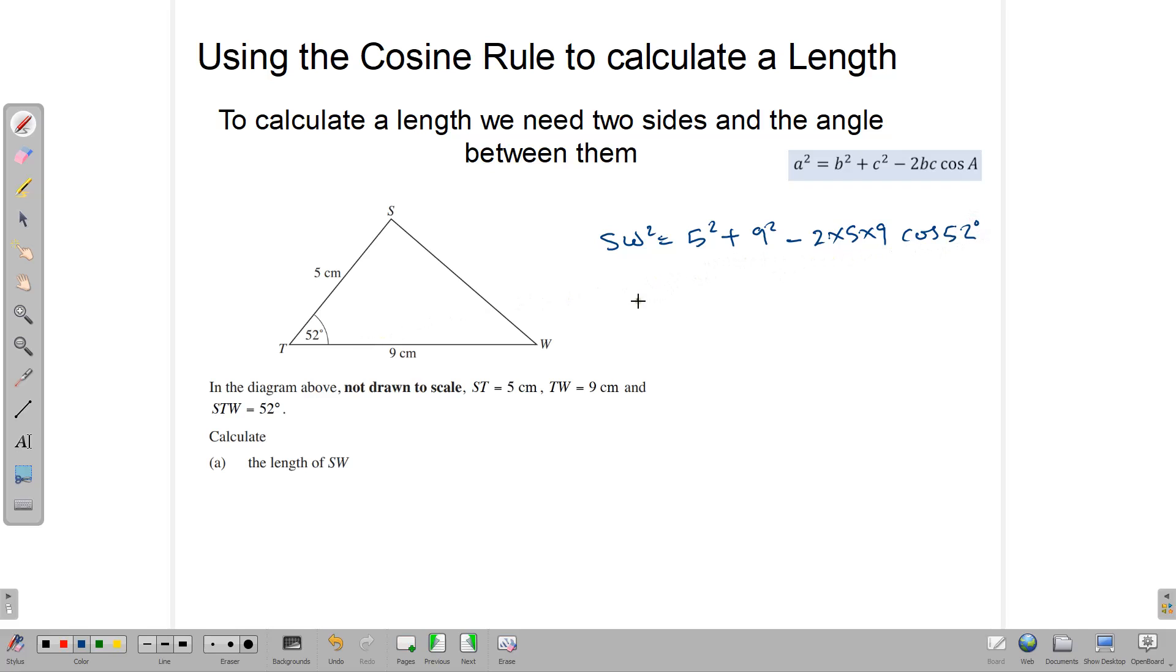So we have SW squared is equal to, once you type that in, 50.6. And then to find SW, since this is the square, we say SW is equal to the square root of 50.6, and that gives us 7.1 centimeters. So SW here would be 7.1 centimeters. That's how we use the cosine rule to calculate a length.